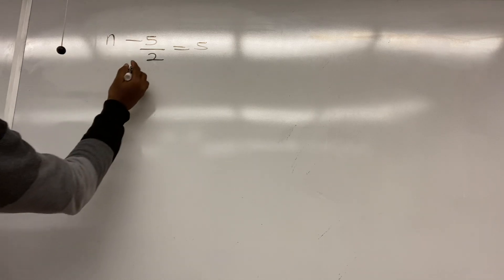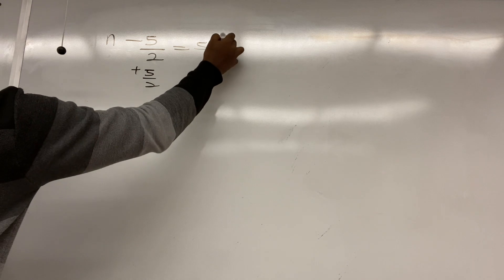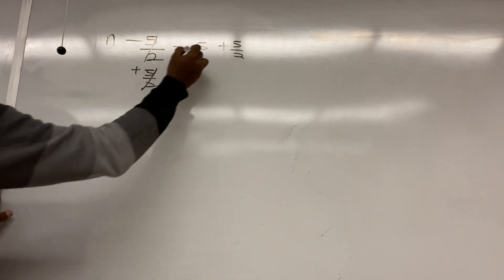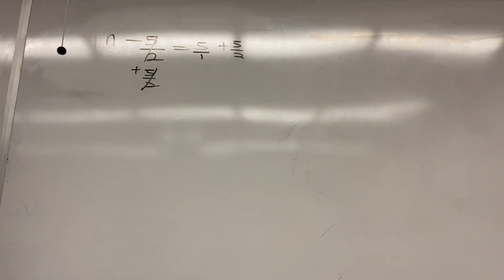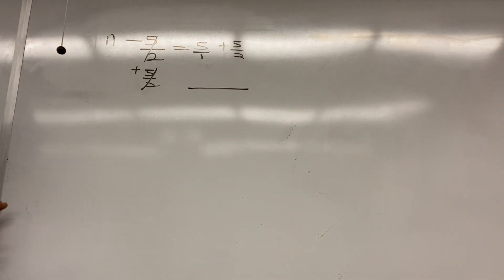This fraction, this is the opposite of it. To get rid of plus 5 over 2, plus 5 over 2, this is the opposite of it. So, okay. And then this is more 1. And then you have to do, what is the answer of more 1 and 2? Oh, 2.